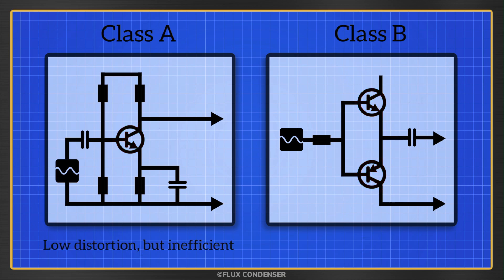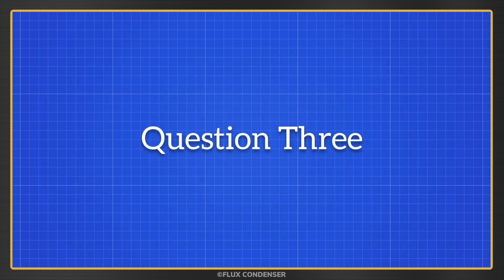Class A amps can be low in distortion but are inefficient as the output transistor is always switched on. Class B amps are much more efficient as only one transistor works at a time and when there's no signal, both are switched off. But class B amps can introduce crossover distortion. Which brings us to question three.